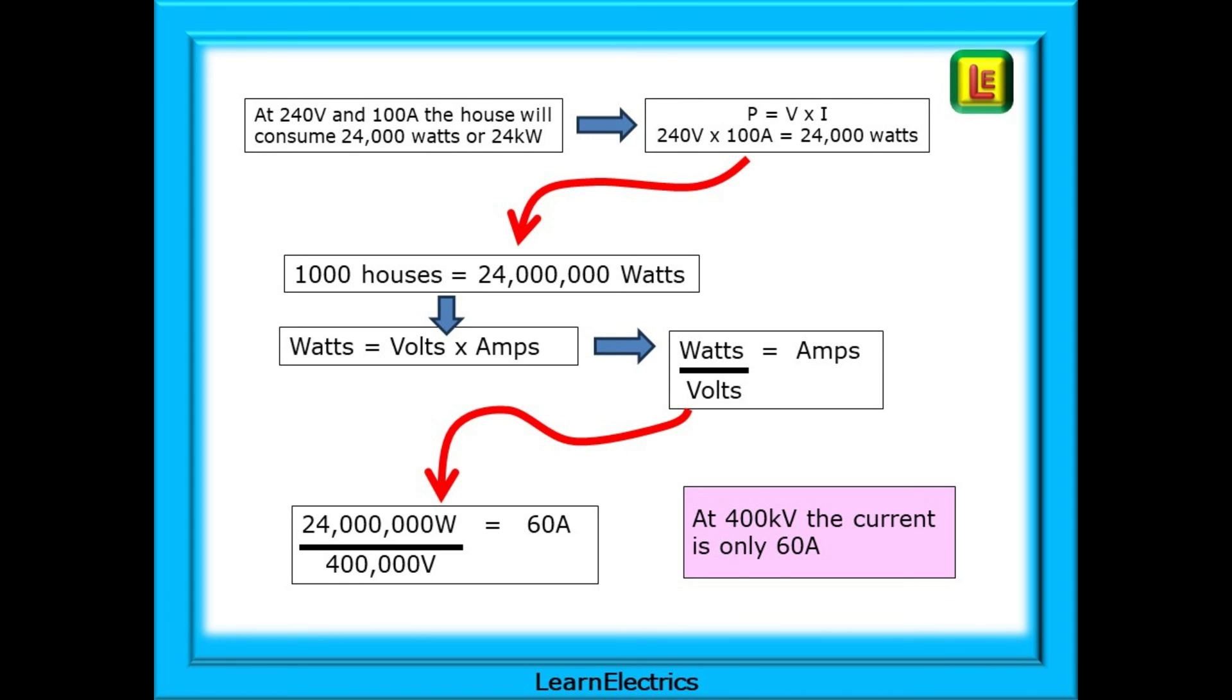So this is what we do. Some very easy calculations. At 240 volts and 100 amps, the house will consume 24,000 watts or 24 kilowatts. We know this from the power formula P equals V times I. So 240 volts multiplied by 100 amps is 24,000 watts. A thousand homes is 1,000 times bigger, so 24 million watts. We also know, ignoring transformer losses, that the wattage across a transformer stays the same. So 24 million watts on the primary or input side will be 24 million watts on the output side, the secondary. We can rearrange watts equals volts times amps to get watts divided by volts equals amps.